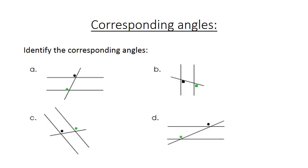Corresponding angles. Identify the corresponding angles. We have A. You can see the black one and the green one are corresponding angles. And B, they are also corresponding. C is also corresponding, and D as well.